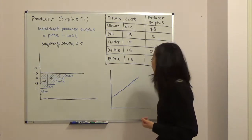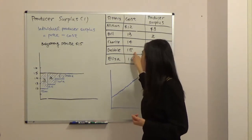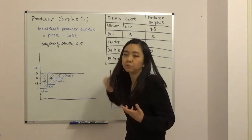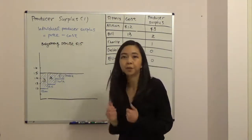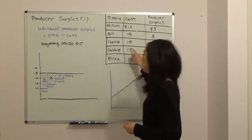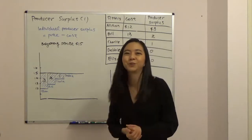Up to Debbie, Debbie's cost is exactly equal to $15. So whether she provides the service or not, suppose she does, then her individual producer surplus will be equal to $15 minus $15, that gives you $0 producer surplus.